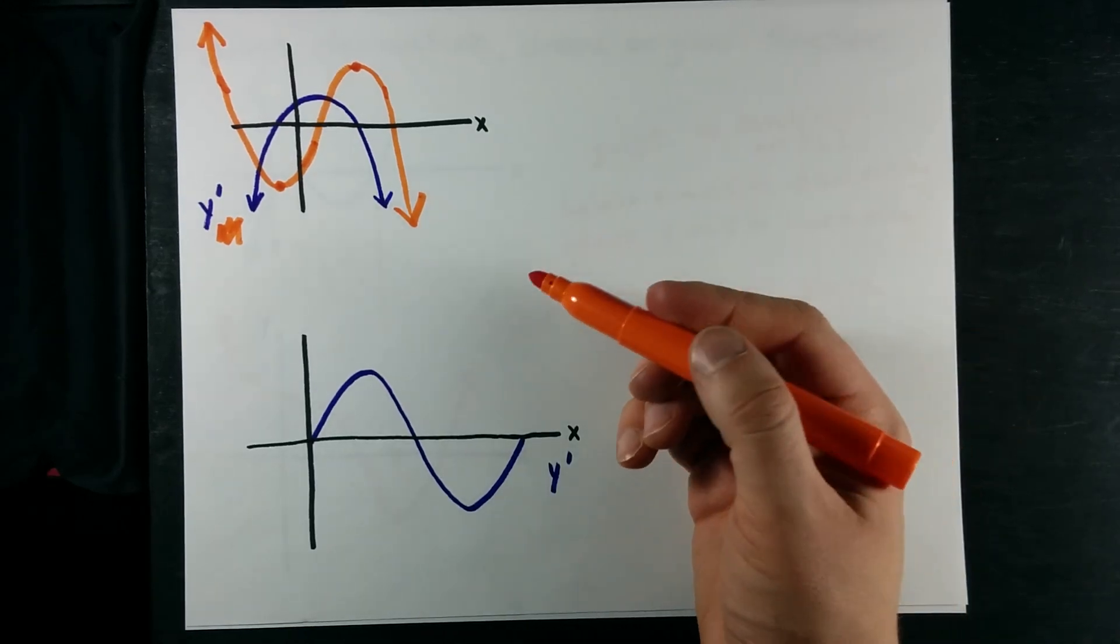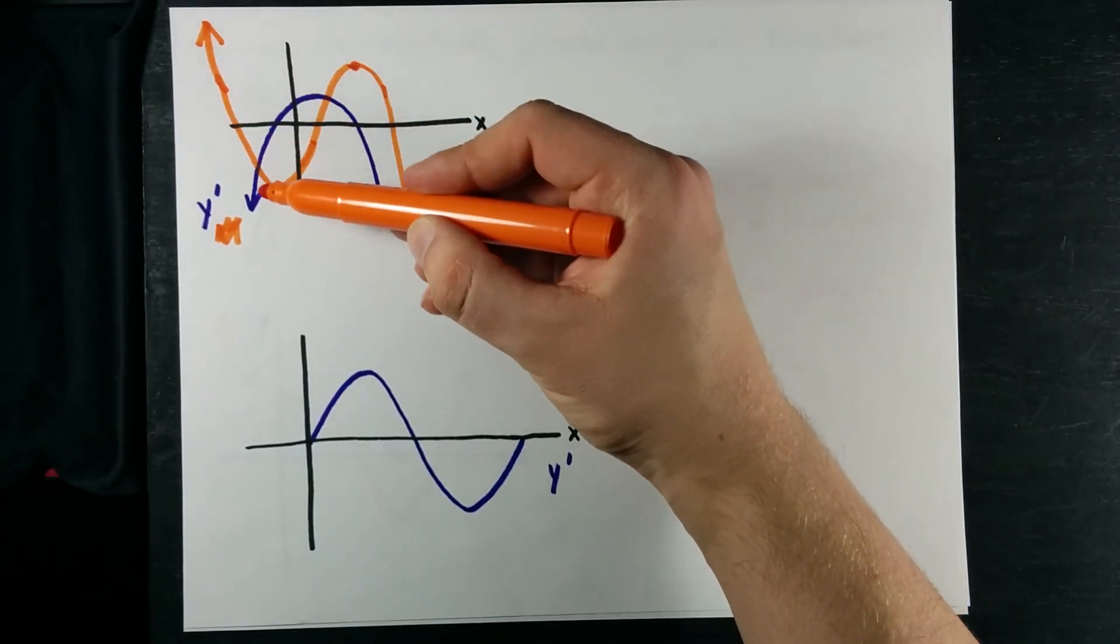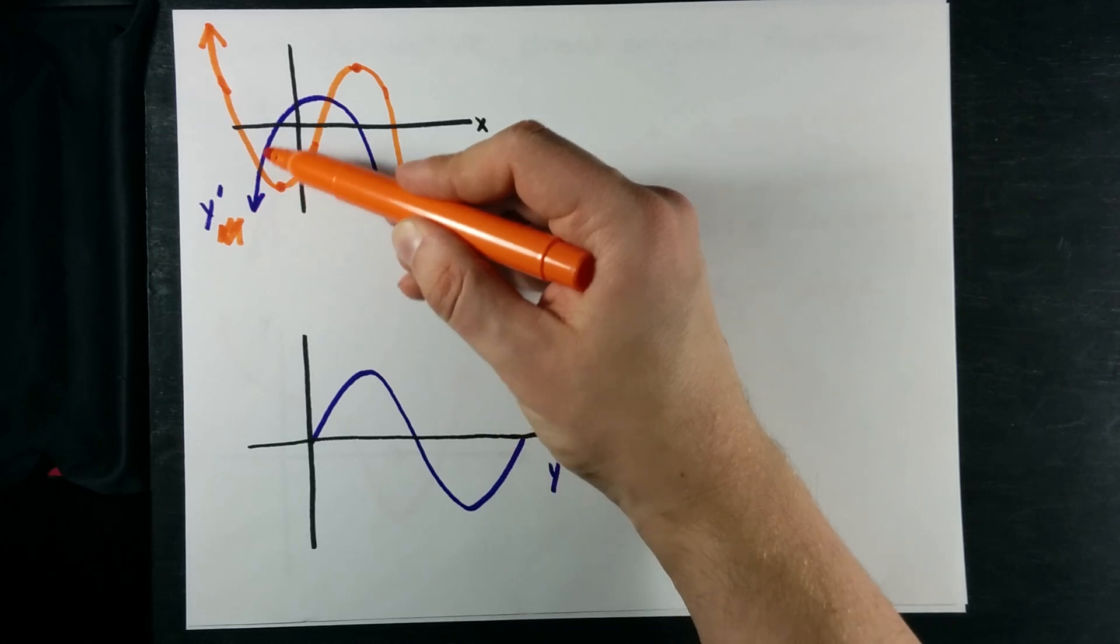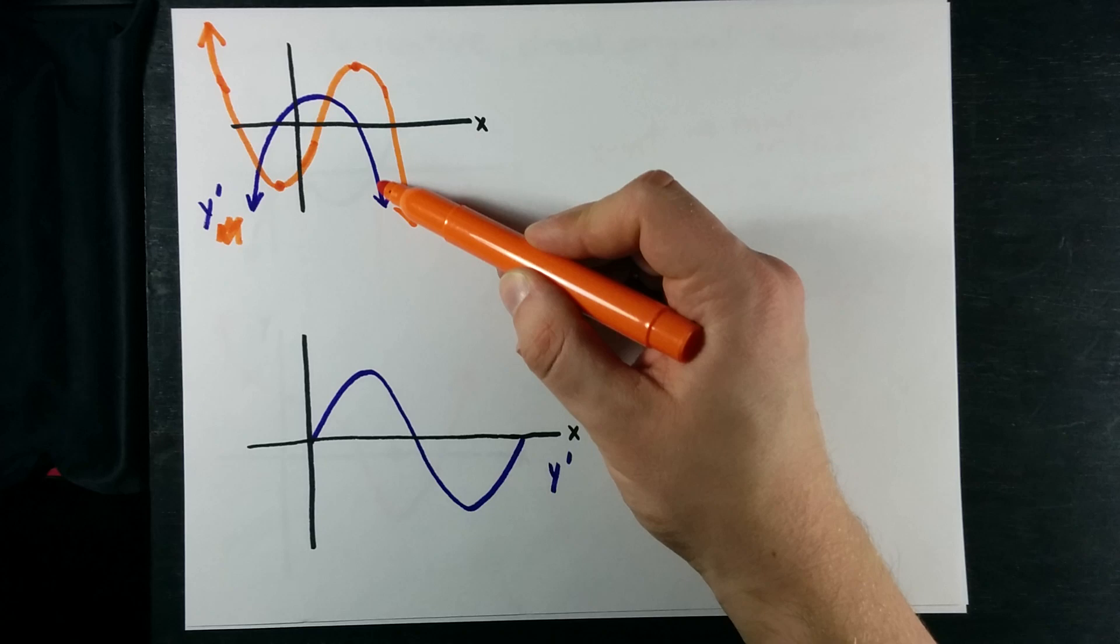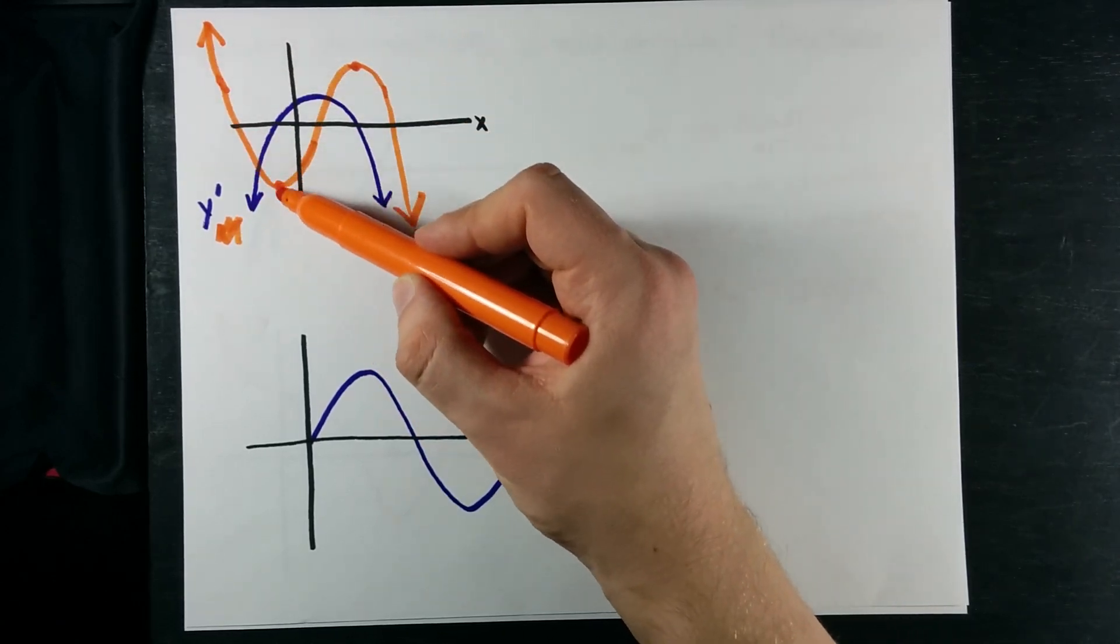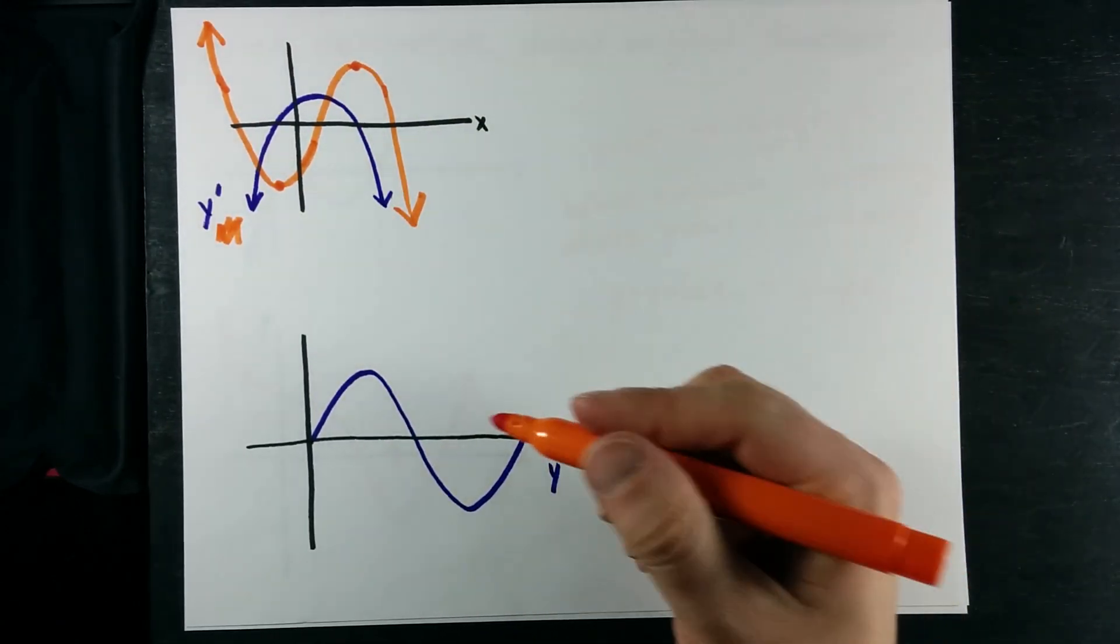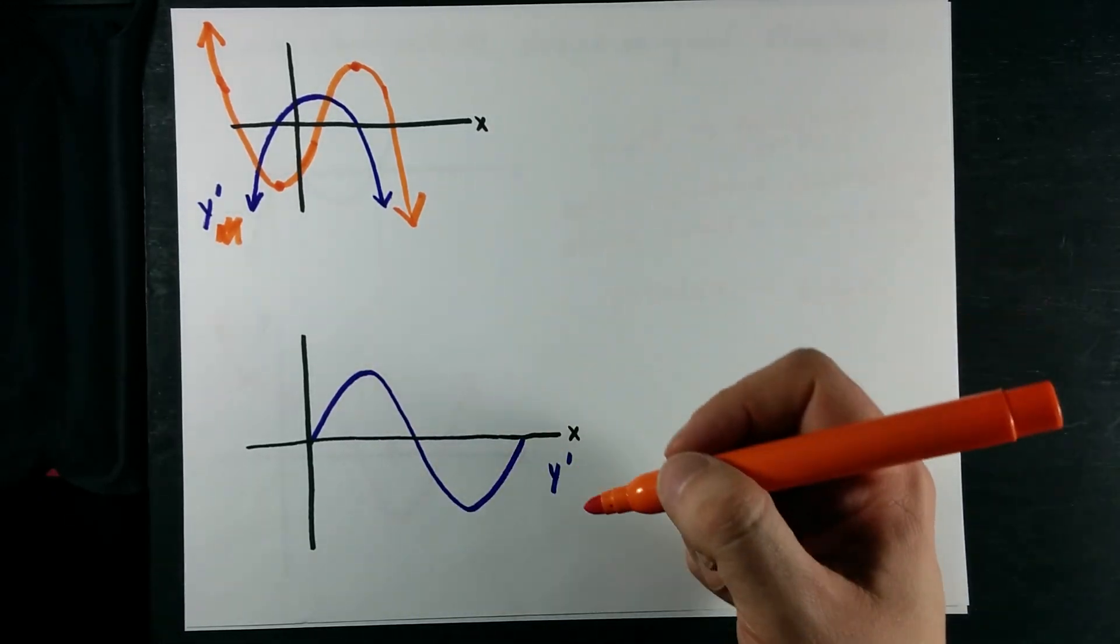If you know anything about derivatives, you'll know that the derivative of a cubic is a quadratic. And so this should make sense. If I give you that the derivative is a quadratic, you know that the original is a cubic. Right? Right. Anyways, let's just do it one more time.